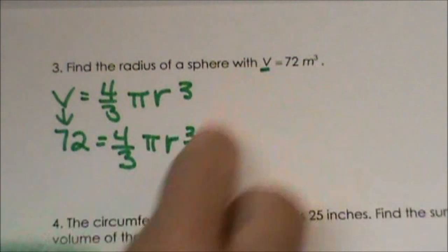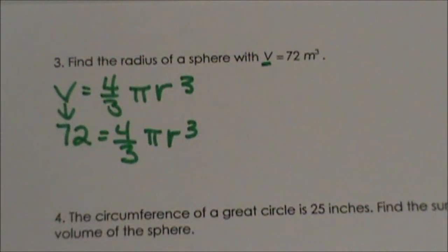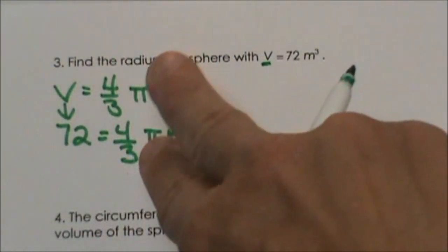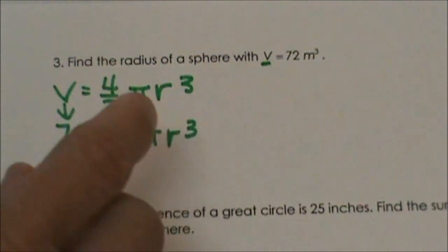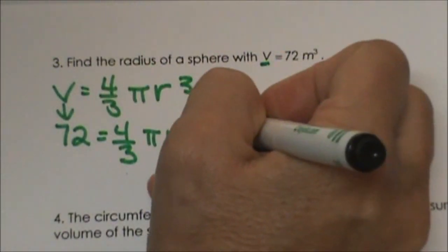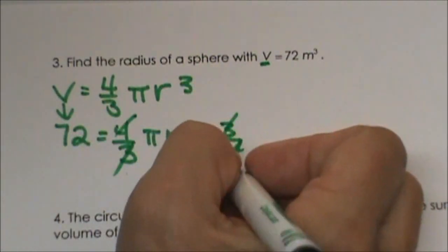The only variable we have in this formula is the radius but we have to get that by itself so we are going to have to undo all of this stuff. To undo a fraction we multiply by its reciprocal so we are going to flip it upside down and multiply both sides by 3 fourths and that cancels out the 4 thirds.